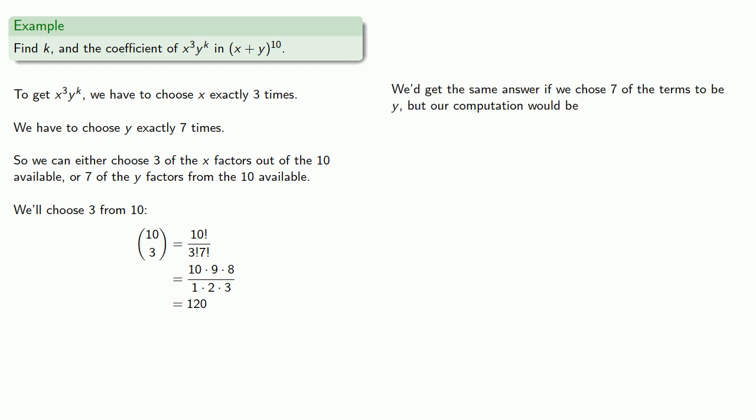Now, it's worth pointing out, we'd get the same answer if we chose seven of the terms to be y. But in that case, our computation would be ten choose seven. That's ten factorial divided by seven factorial, three factorial. Our denominator will be seven factorial, and our numerator would have seven factors, starting with ten and going down. And numerically we'd get exactly the same value, it's just that ten choose seven is a little harder to compute.